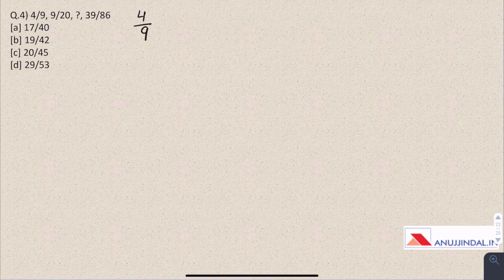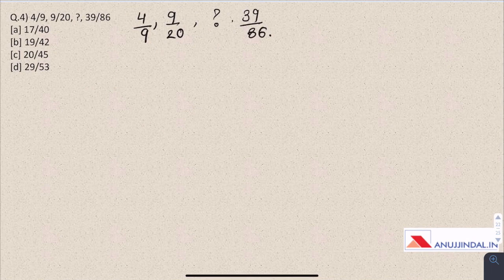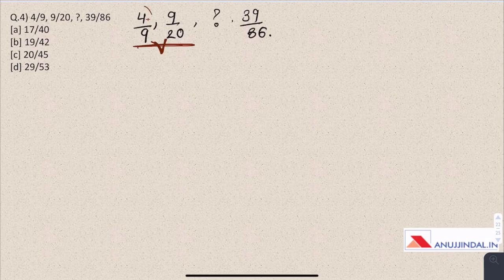Question 4. We have been given three fractions and we have to find the third number in the series of these fractions. So firstly what we should do is we should find the difference. Here you can simply see that to get the second fraction after the first fraction we add plus 5 and plus 11 in the denominator. This is the fourth number.